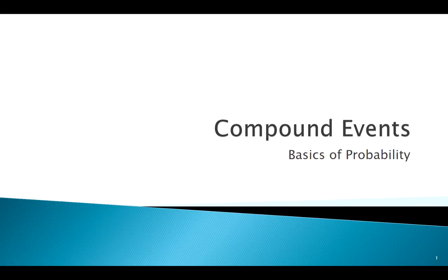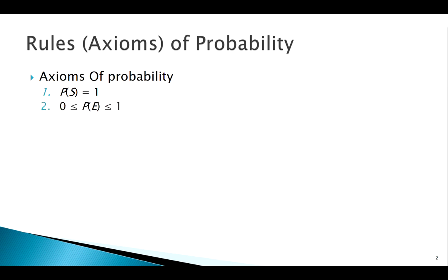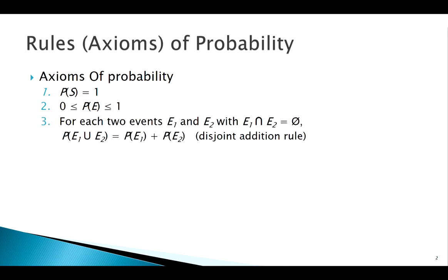Welcome back. We've already got all the terminology and the tools in place to now actually find some probabilities of compound events. Where that starts is back at our axioms of probability. Number one, everything in our sample space has to add up to one. Number two, the probability of any event has to be between zero and one. And now we're going to make more sense of our third axiom of probability — that's our disjoint addition rule.